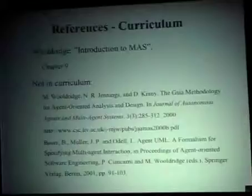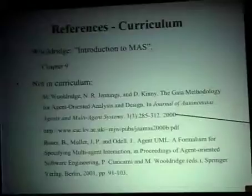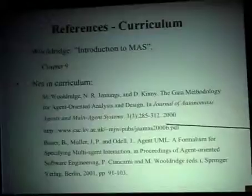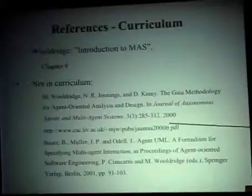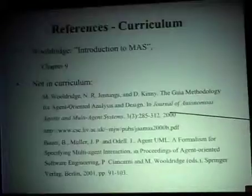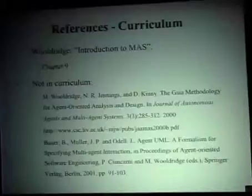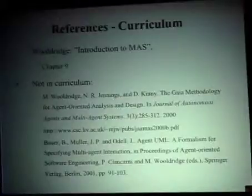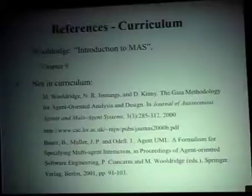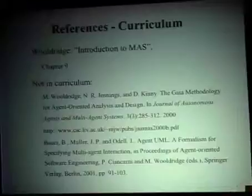Today's lecture is related to chapter 9 in the textbook, but I also strongly recommend you read the Gaia paper, because I only briefly present the Gaia approach here and in the textbook it is only mentioned — the paper has all the details. This is available on the web. This is also about Agent-UML, available on the web even if I didn't give you the URL directly. In order to understand it better, I recommend you look into the original paper.